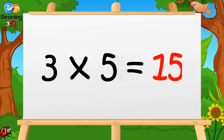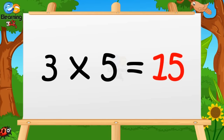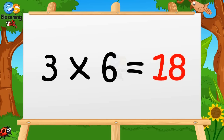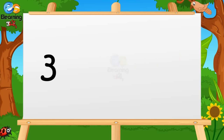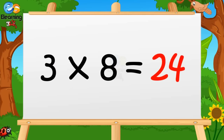Three fives are fifteen. Three sixes are eighteen. Three sevens are twenty-one. Three eights are twenty-four.